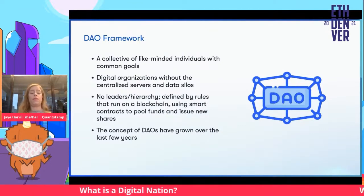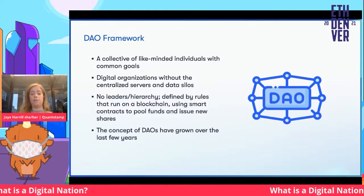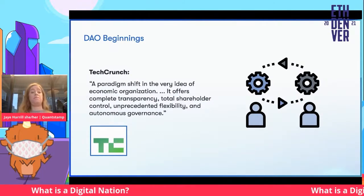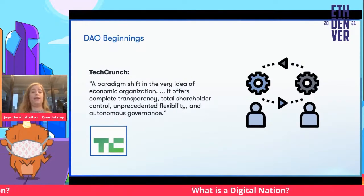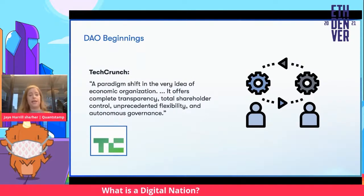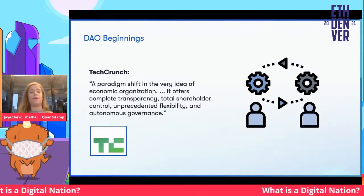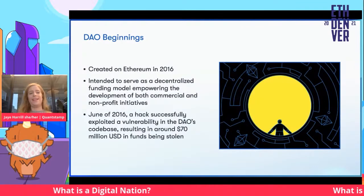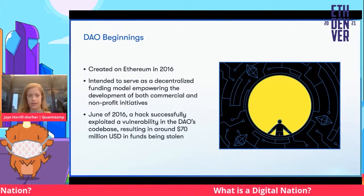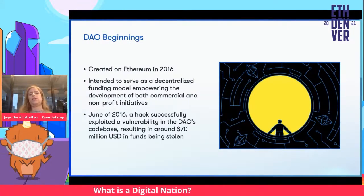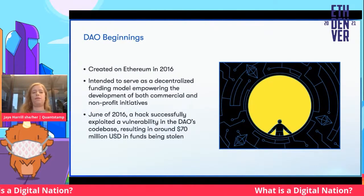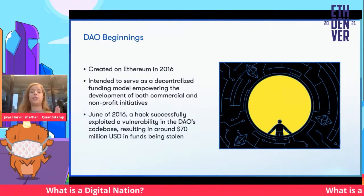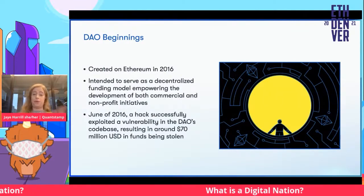The concept of DAOs has grown over the last few years. TechCrunch even said it's a paradigm shift in the very idea of economic organization — it offers complete transparency, total shareholder control, unprecedented flexibility, and autonomous governance. The DAO was created in 2016 with a grand vision of serving as a decentralized funding model for both commercial and nonprofit purposes. Unfortunately, it was hacked, and it created a contentious chain fork which ended up splitting Ethereum into Ethereum and Ethereum Classic.